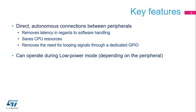The interconnect matrix offers two main features. First, it ensures direct and autonomous connections between peripherals, removing latency in regards to software handling, thus saving GPIO and CPU resources. Second, the interconnect between certain peripherals can even operate during low-power modes.